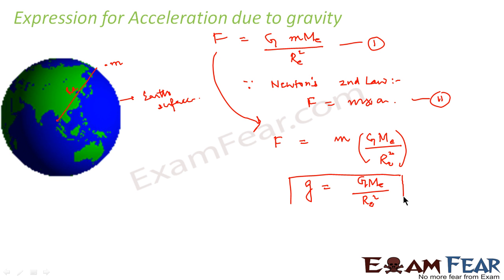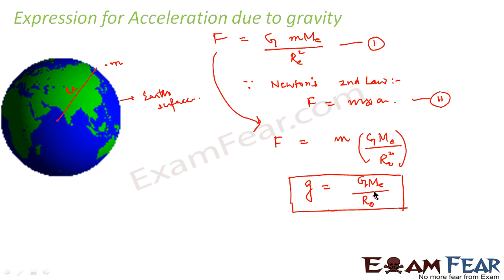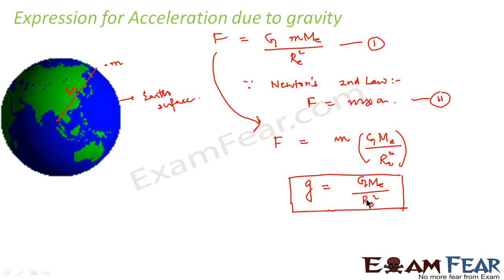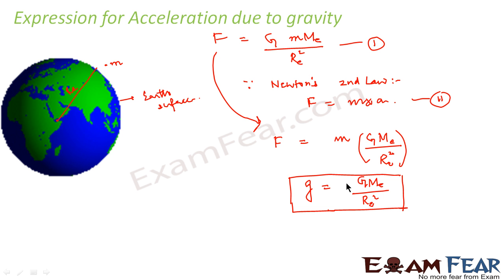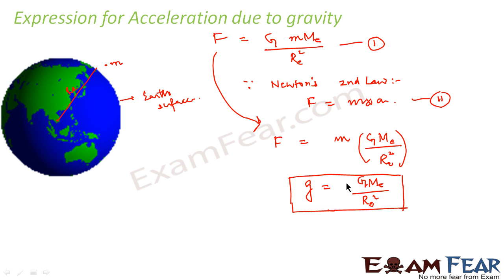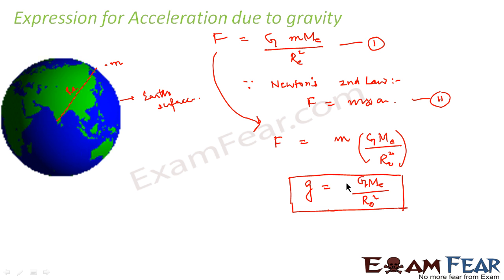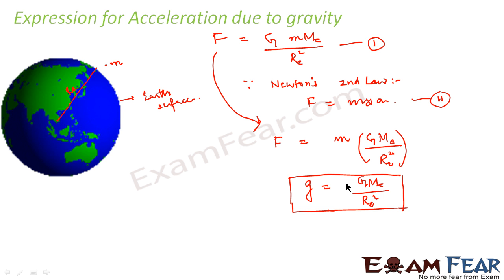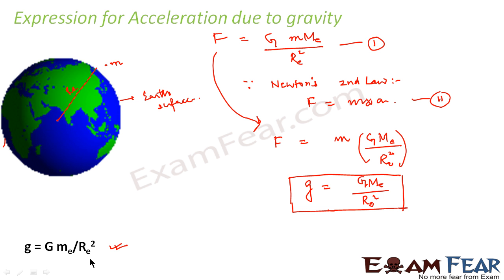So the expression for acceleration due to gravity is g = G·M_e / R_e². Whenever we know the values of G, M_e, and R_e, we can calculate the value of acceleration due to gravity. This derivation considered an object placed very near to the surface of the earth. Gradually we will find expressions for acceleration due to gravity for an object above the surface of the earth, and similarly for an object below the surface of the earth — we will cover those cases one by one.